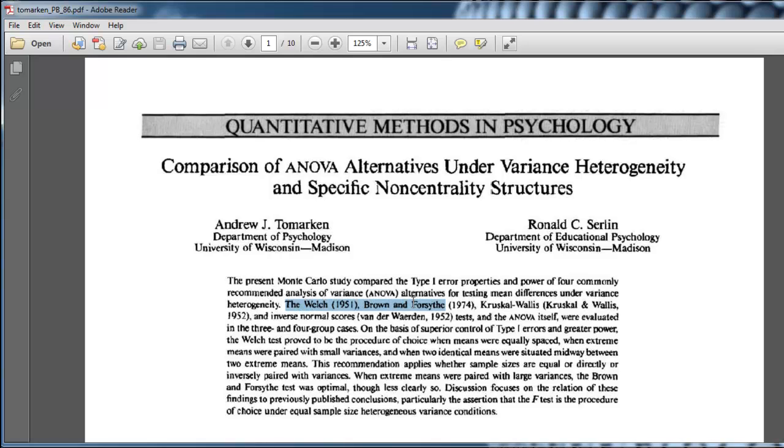is they compared the Welch test, the Brown-Forsythe, Kruskal-Wallis, another test called inverse normal scores, to be honest, I've never heard of that test,